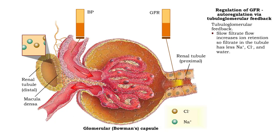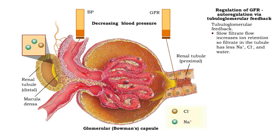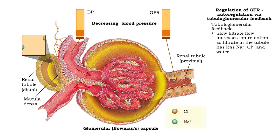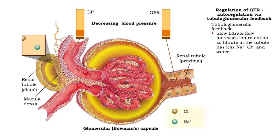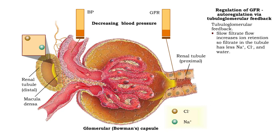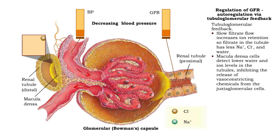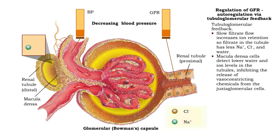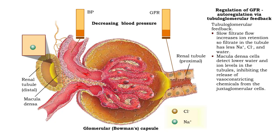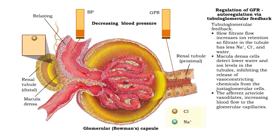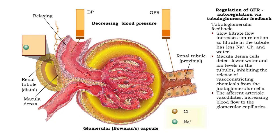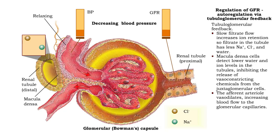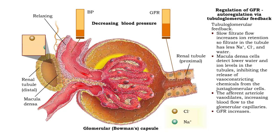When blood pressure is below normal, slow filtrate flow increases ion retention so filtrate in the distal convoluted tubule has less sodium ions, chlorine ions, and water. Macula densa cells detect lower water and ion levels in the tubule and inhibit the release of vasoconstricting chemicals from the juxtaglomerular cells. The afferent arteriole vasodilates, increasing blood flow to the glomerular capillaries. Glomerular filtration rate increases.